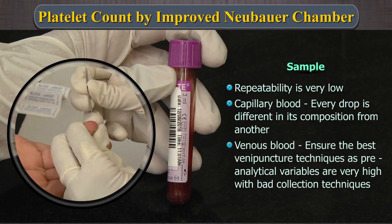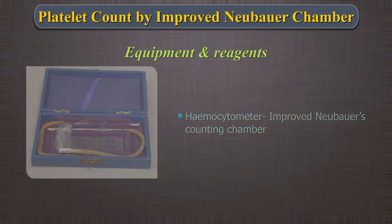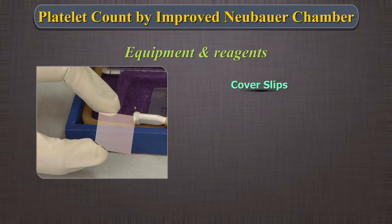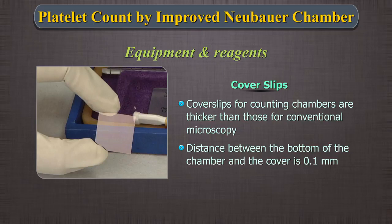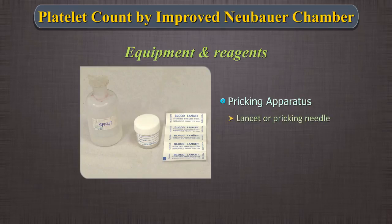For venous blood, ensure the best venipuncture techniques as pre-analytical variables are also very high with bad collection techniques. Equipment and reagents: 1. Hemocytometer - Improved Neubauer counting chamber. 2. Compound microscope. Ideally, platelet counts should be done using phase contrast microscopy; however, we are discussing ordinary bright field microscopy here. 3. Coverslips for counting chambers are specially made and thicker than those for conventional microscopy, designed so that the distance between the bottom of the chamber and the cover is 0.1 mm. 4. Pricking apparatus comprising lancet, pricking needle, syringe needle, or evacuated tubes.